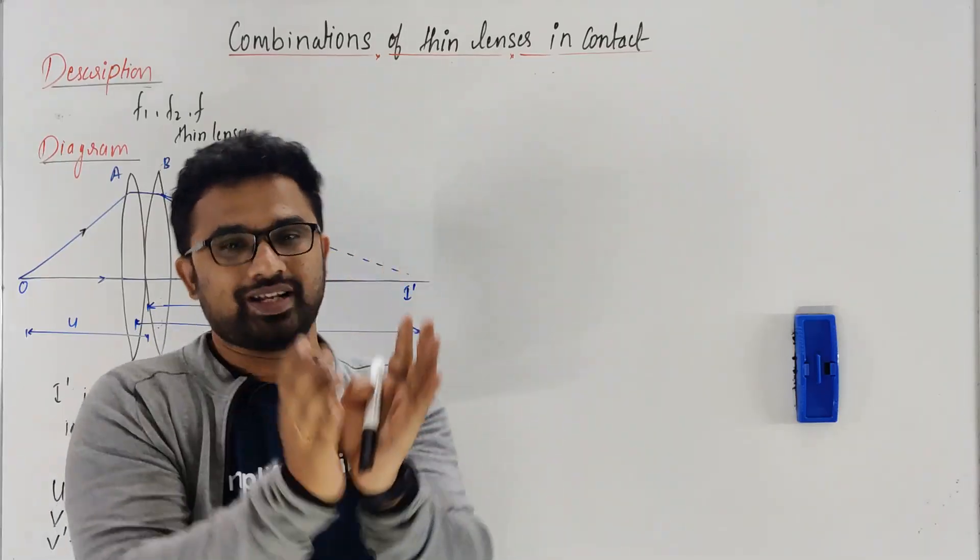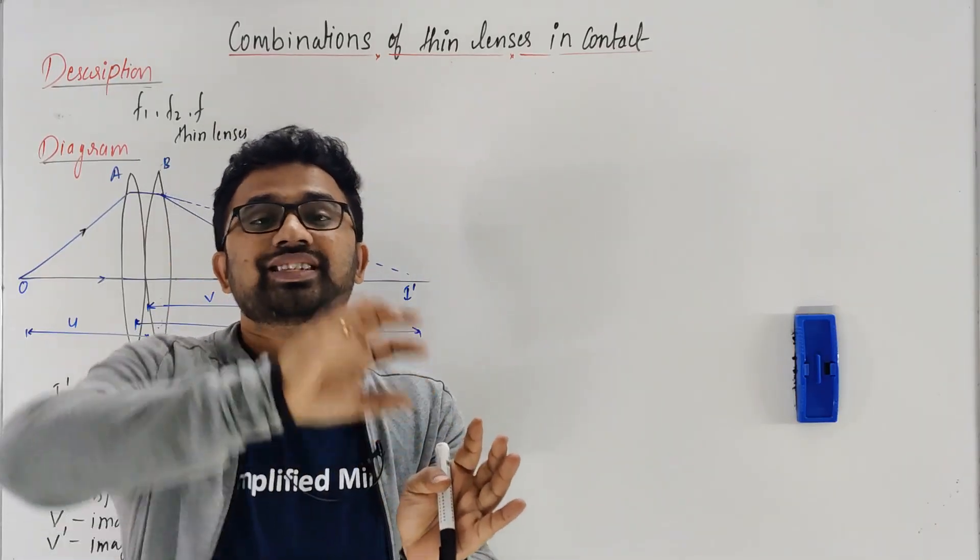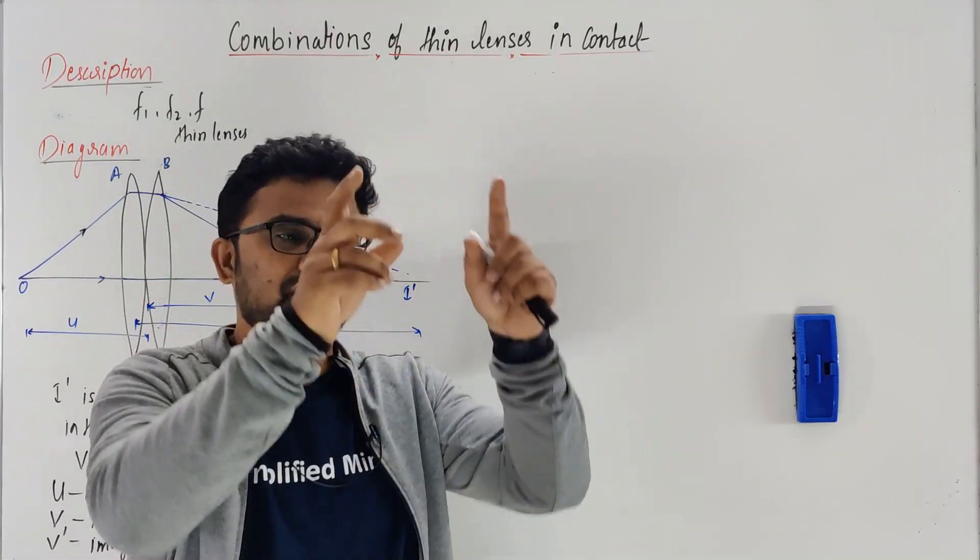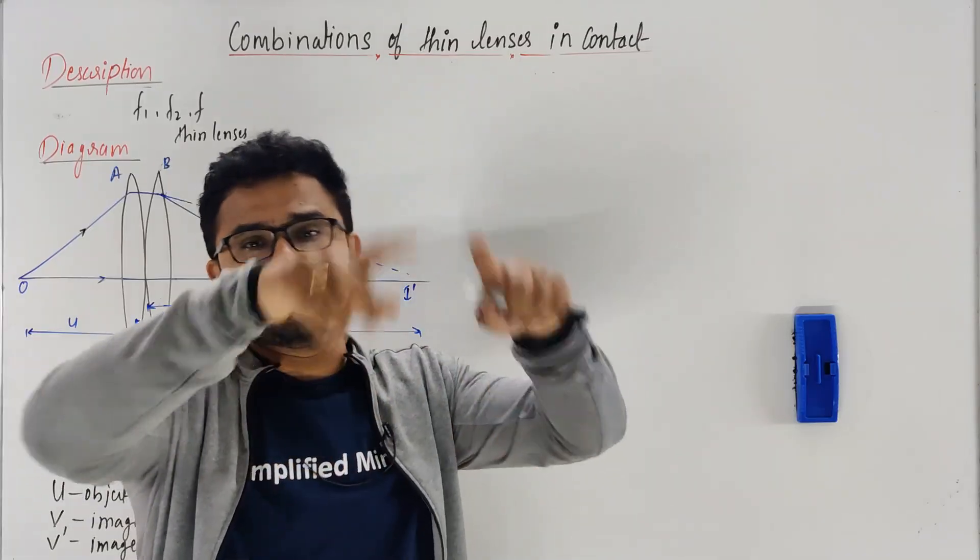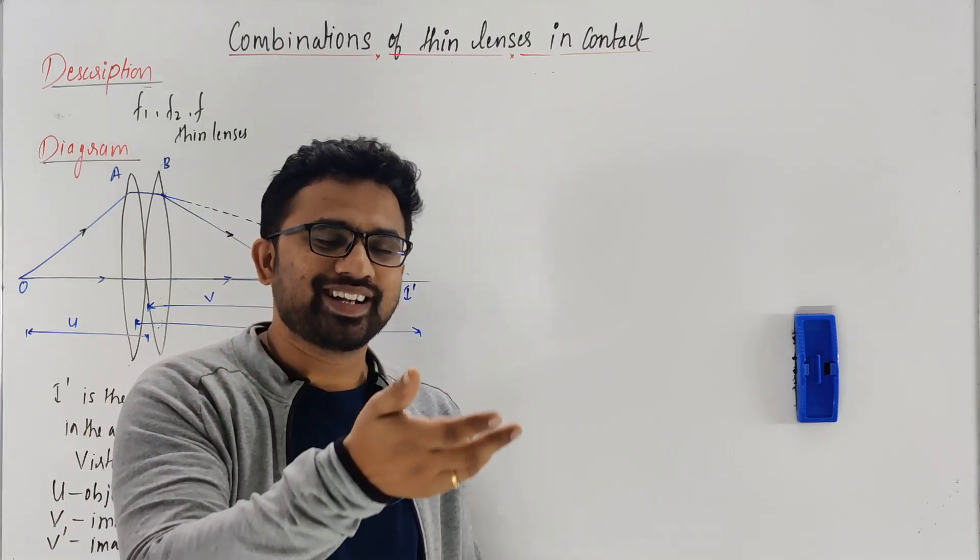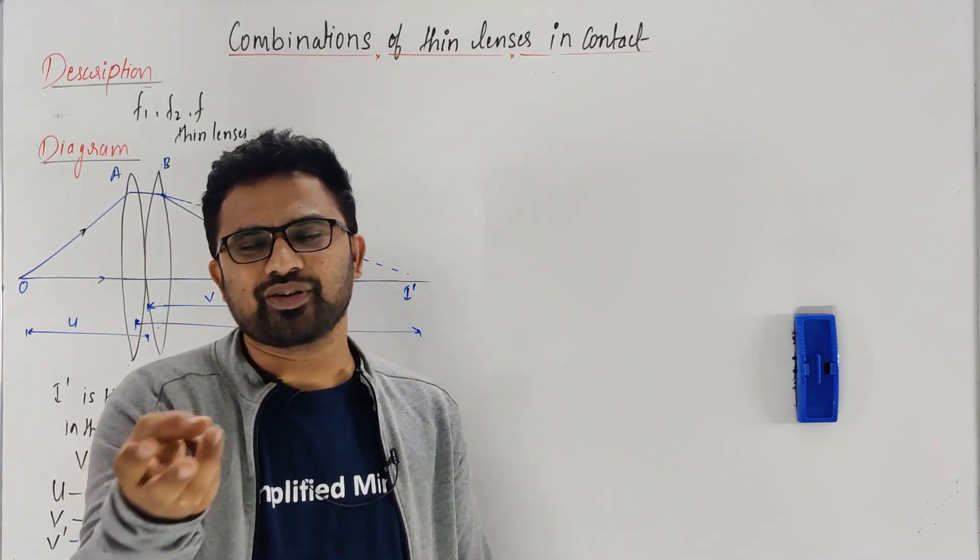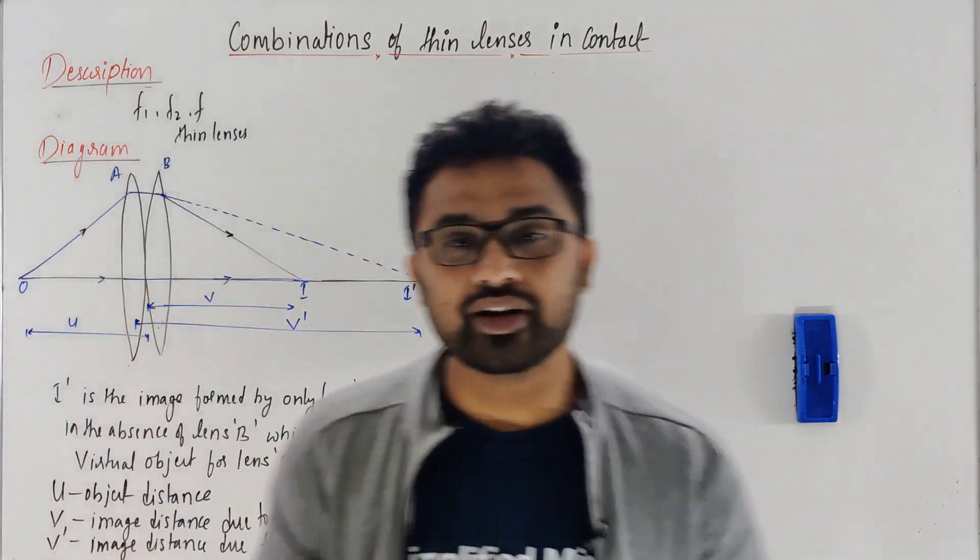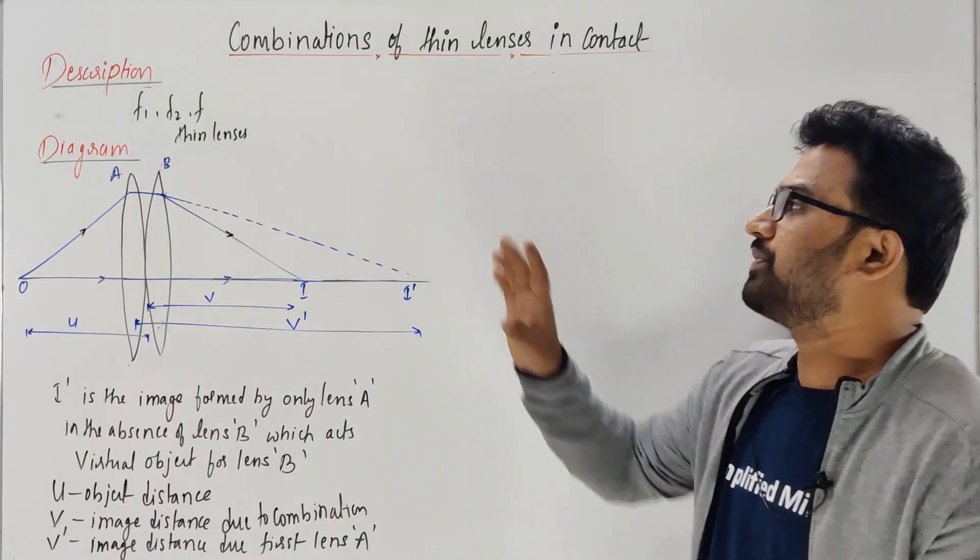What we are trying to find is very simple: two lenses are in contact, so we have to replace the two lenses with a single lens which gives the same focal length as these two lenses. It's like equivalent resistance, equivalent cells, equivalent EMF.